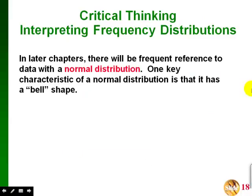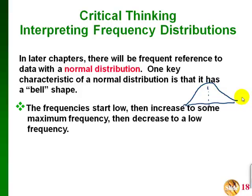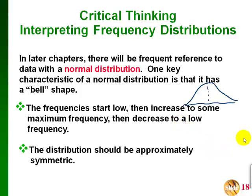When interpreting frequency distributions, one important concept is the normal distribution. A key feature of a normal distribution is its bell shape: it starts low on one end, rises to a high point approximately in the middle, and then goes back down on the right end. The frequencies start low, increase to a high point around the middle, and decrease back to a low point. For a normal distribution, this picture should be approximately symmetric — a mirror image on either side of the middle point.